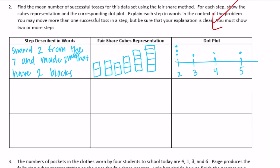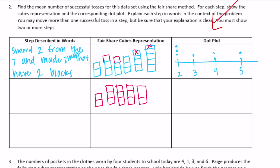For the next step, I'm going to take from the five and from the four and add to the others. So I'd have three twos — wait, four threes. So we're getting closer to a fair share, and a four remains.